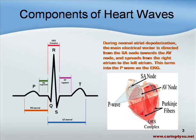The SA node and the AV node make up the activity of the P wave. During normal atrial depolarization, the main electrical vector is directed from the SA node towards the AV node and spreads from the right atrium to the left atrium. This turns into the P wave on an EKG. The P wave represents atrial activity.